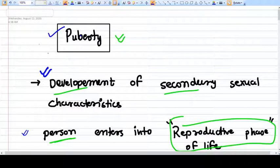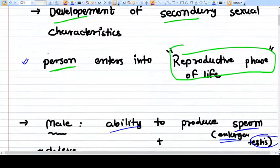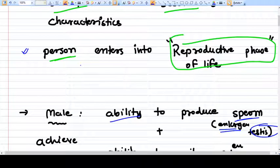Puberty is basically the development of secondary sexual characteristics where the person enters into the reproductive phase of his or her life.